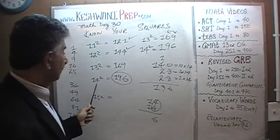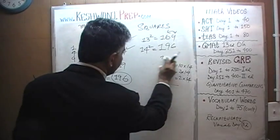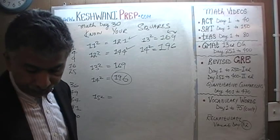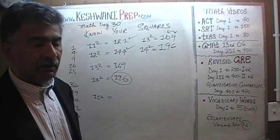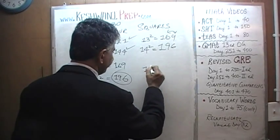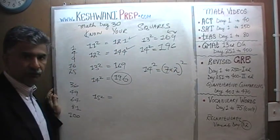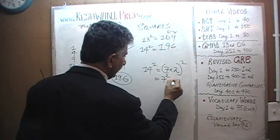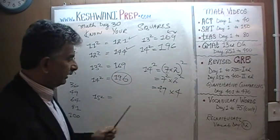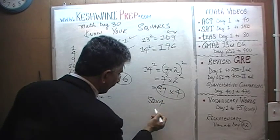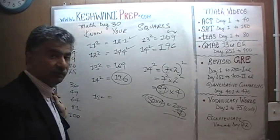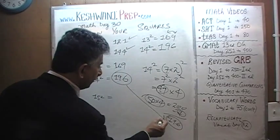Another way to think of 14 squared: 14 is same as 7 times 2, so 14 squared is 7 squared times 2 squared. 7 squared is 49, and 2 squared is 4, so it's 49 times 4. Think of it as 50 times 4 minus 1 four: 200 minus 4 is 196.